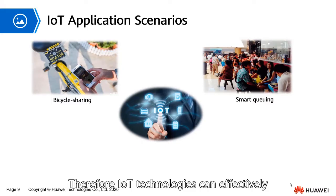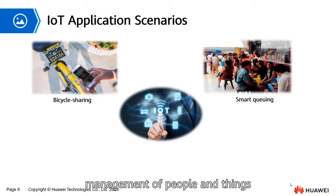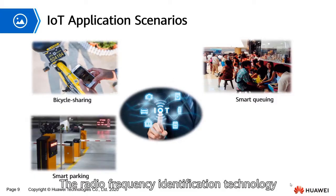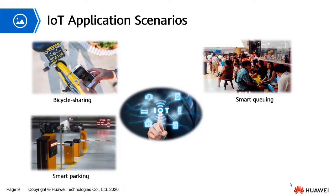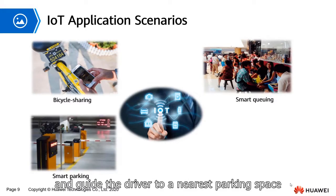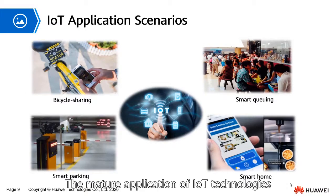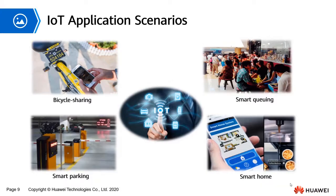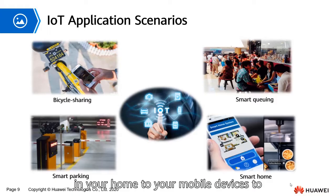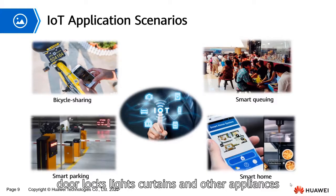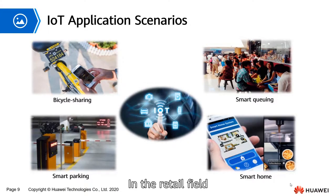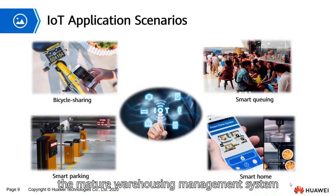The RFID technology can monitor and manage medical devices and articles, making them visualized and hospitals digitalized. Therefore, IoT technologies can effectively help hospitals implement intelligent management of people and things. The radio frequency identification technology can also help implement unmanned vehicle supervision, navigation, and parking. An in-vehicle device can automatically display navigation information and guide the driver to a nearest parking space. Smart home is the most important part of IoT closest to our daily life — IoT technologies connect devices in your home to your mobile devices to remotely control garage doors, door locks, lights, curtains, and other appliances, implementing intelligent device management. In the retail field, diversified IoT applications exist, such as the mature warehousing management system and smart retail scenarios.